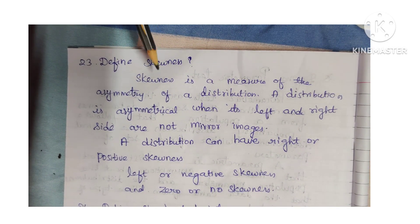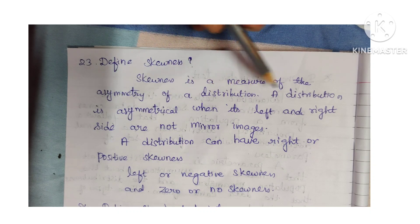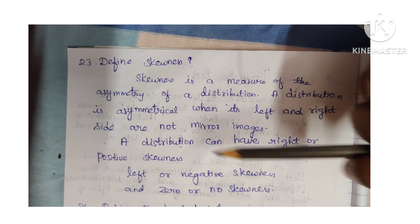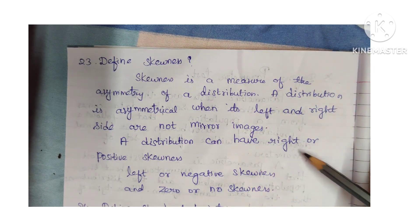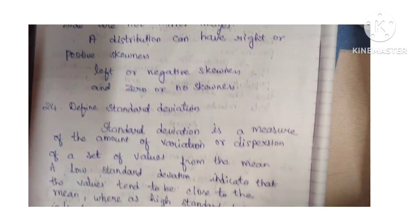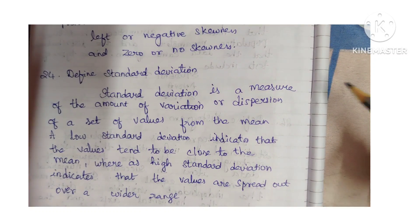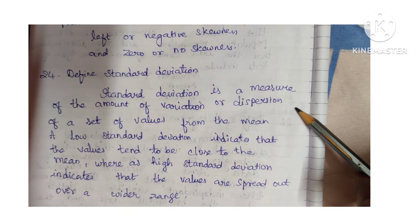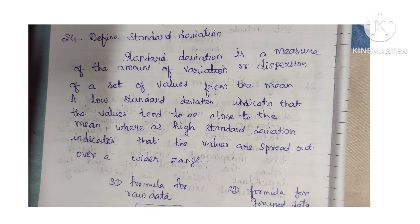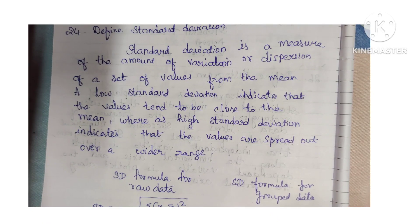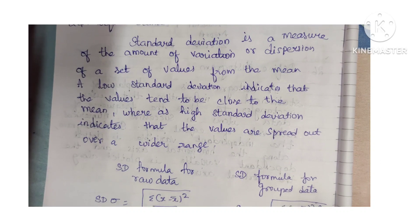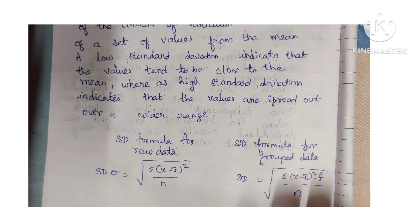Define parametric test. Parametric tests are those that assume the sample data comes from a population that follows a probability distribution — the normal distribution — within a fixed set of parameters. A parameter is a standard statistical test that makes an assumption about the population parameters and the distribution the data came from.